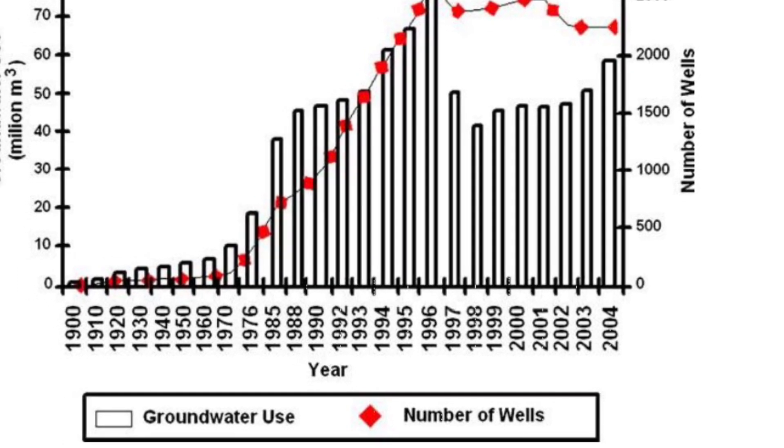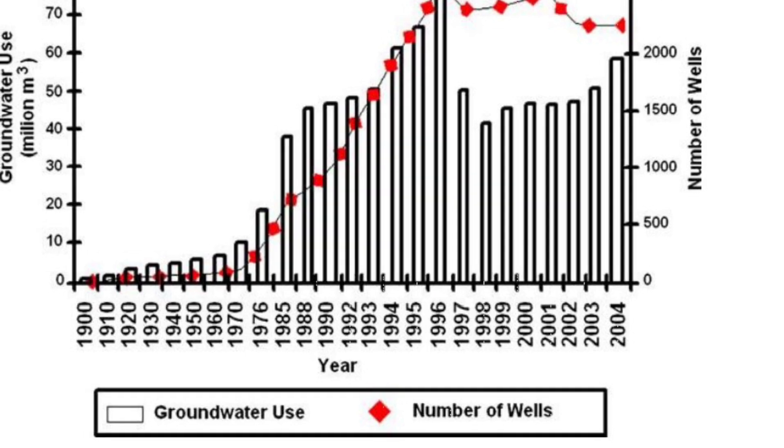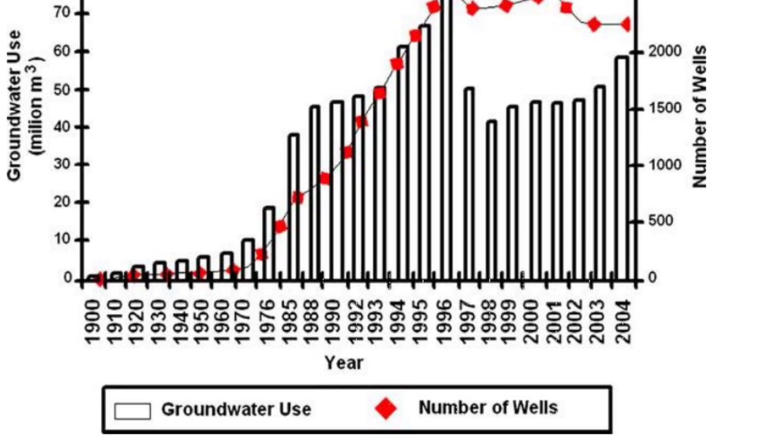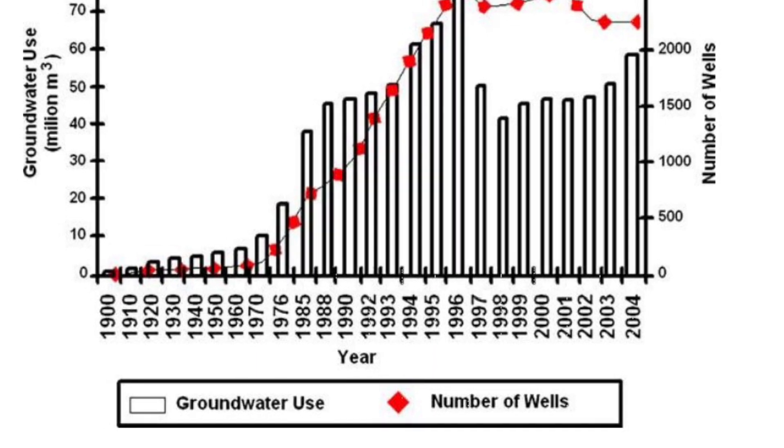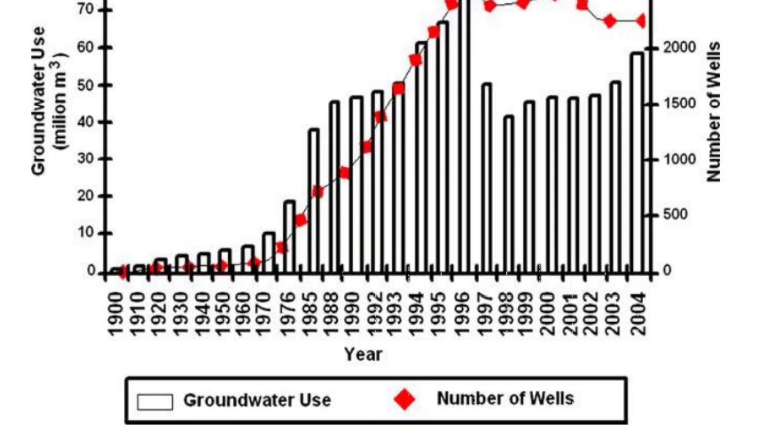Since 1900, the number of wells has increased to 2,500, and the groundwater use was in 1995 80 million cubic meters of water.